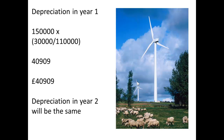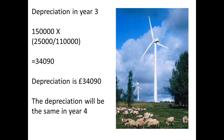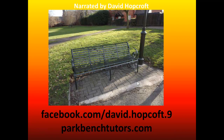In year 1, the depreciation will be 150,000 × 30,000 ÷ 110,000, which comes to £40,909. Since production in year 2 is also 30,000 megawatts, the depreciation in year 2 will be the same. In year 3, with 25,000 megawatts, the calculation is 150,000 × 25,000 ÷ 110,000, giving £34,090. The depreciation in year 4 will be exactly the same.